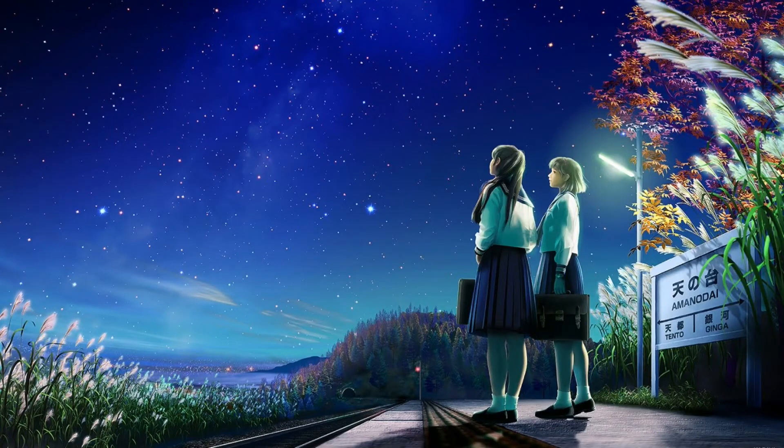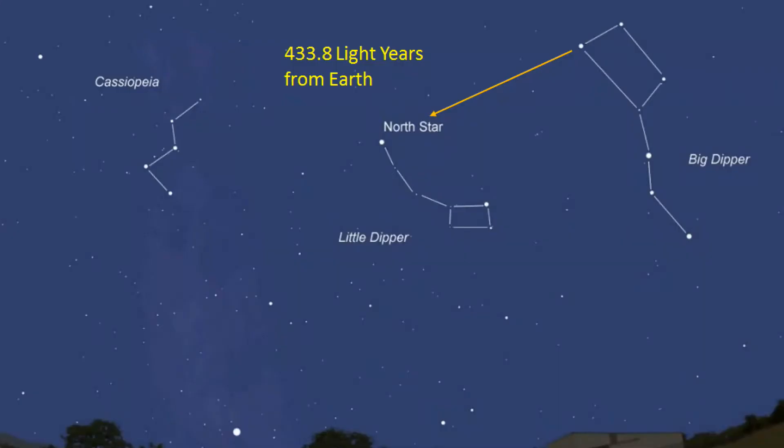Now what's even more interesting is when you go out and look at the night sky. Light from those stars has been traveling for a long time to reach the Earth. How long? Let's take the Pole Star — also called the North Star, or Polaris — in the Ursa Minor constellation, just opposite to Ursa Major.